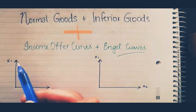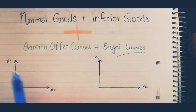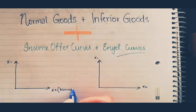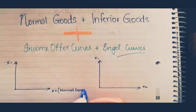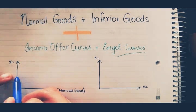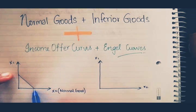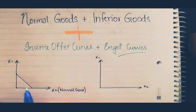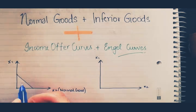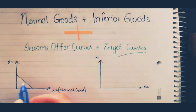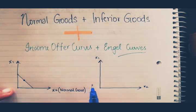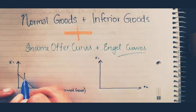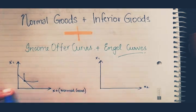I'd like to explain normal goods using a diagram and an example. Consider you have two goods, X1 and X2, and we're going to consider X2 to be our normal good. The first thing you need to draw is your budget constraint — this is the line that determines your income. Income shifts will be determined by this budget constraint. Then choose your optimum bundle that you would like to consume of this good, and we draw an indifference curve.